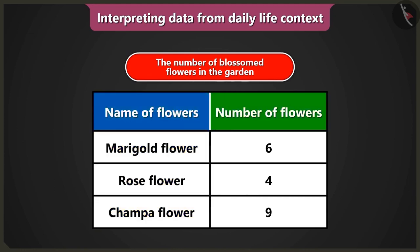Now read the second column. What is the number of flowers? The number of miracle flowers is six. The number of rose flowers is four. And the number of chumpa flowers is nine.